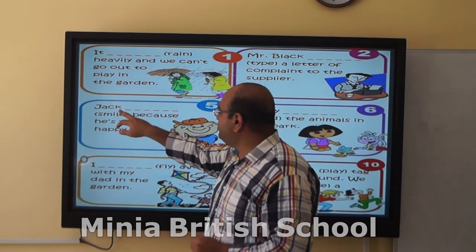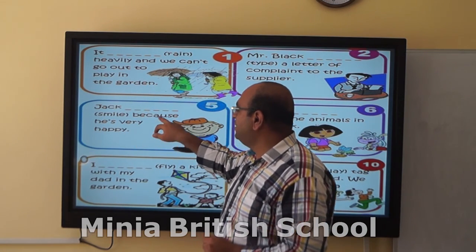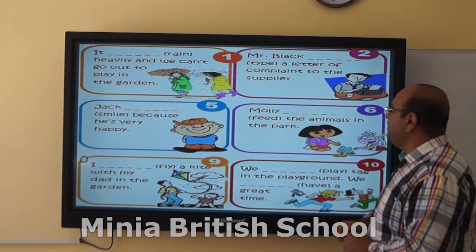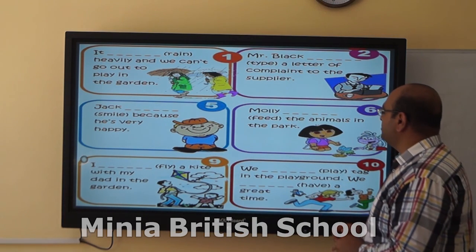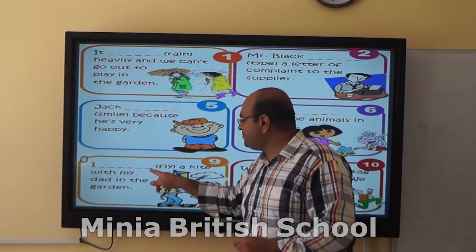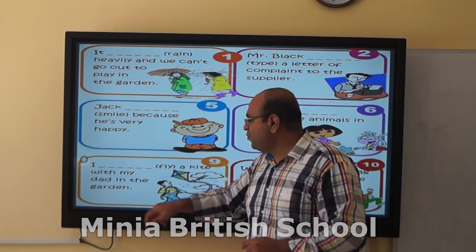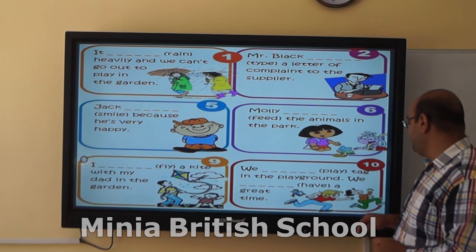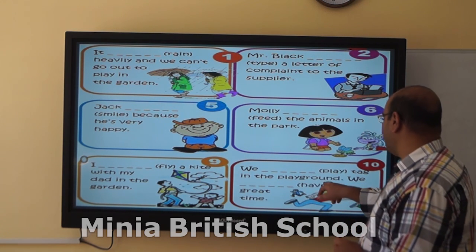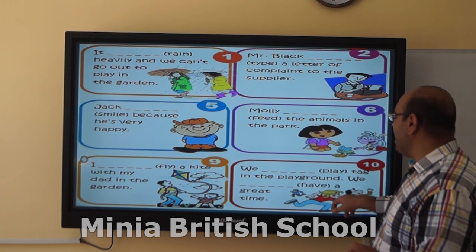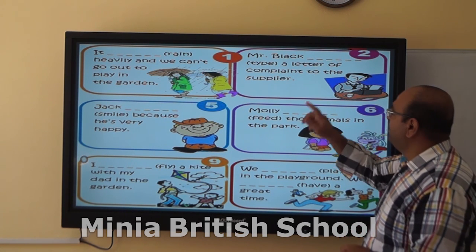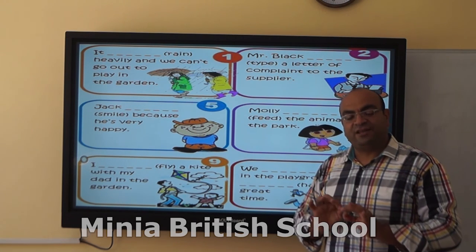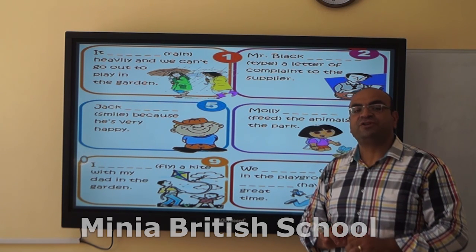Number five: Jack's face — smile — because they are then happy. Six: Molly feeds the animals in the rock. Nine: I — fly — hide with my dad in the garden. Ten: we — lay — in the playground with a great time. I have saved all the verbs and now it's time to put them in the correct present continuous.